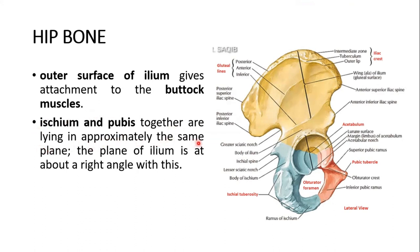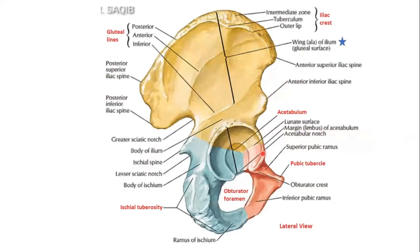The ischium and pubis together are lying in approximately the same plane, and the ilium's plane is at a right angle with this. The gluteal lines are very visible — you could see the superior, middle, and inferior gluteal lines. This is again the obturator foramen below the acetabulum, and this is the big strong ischial tuberosity.